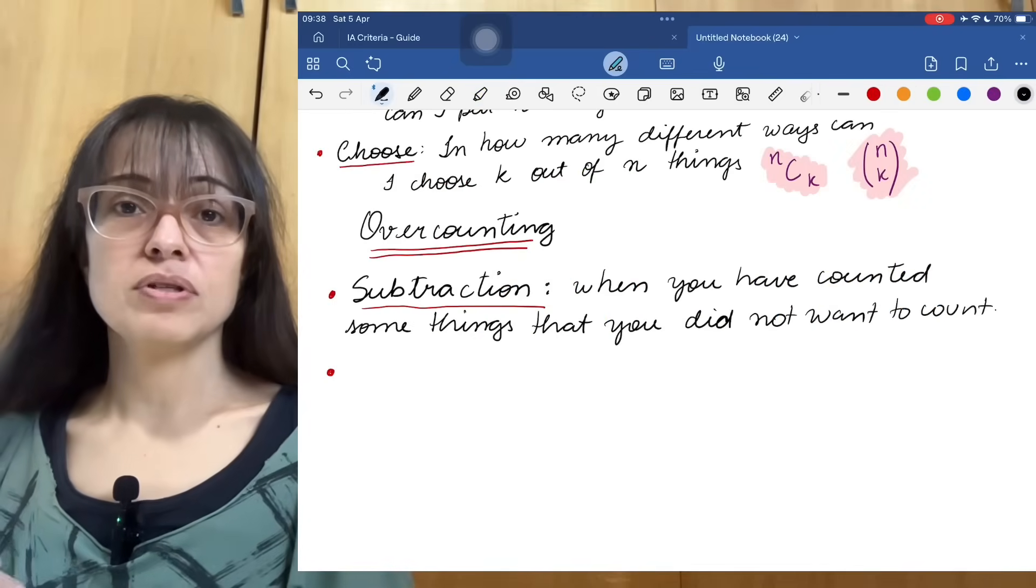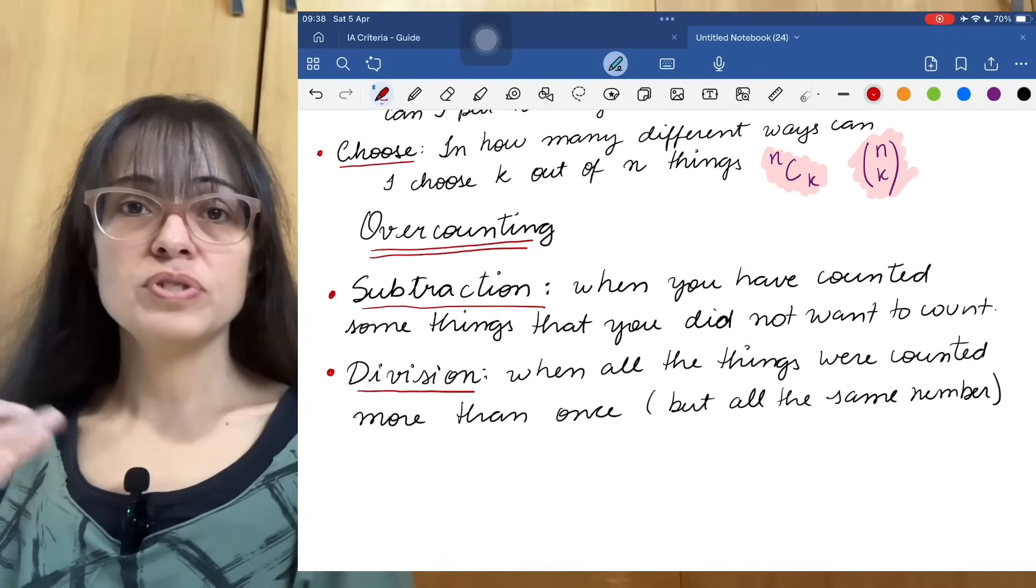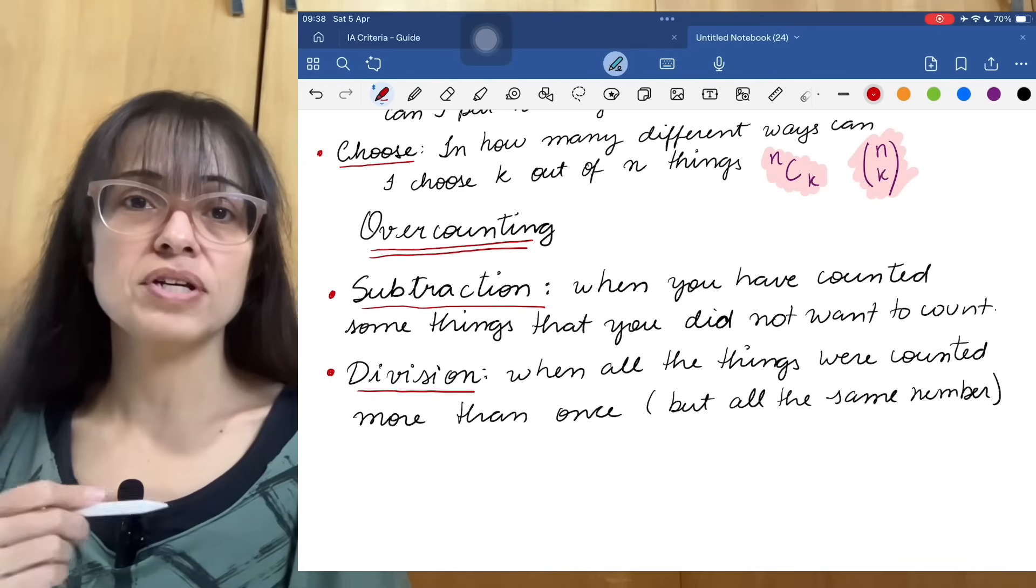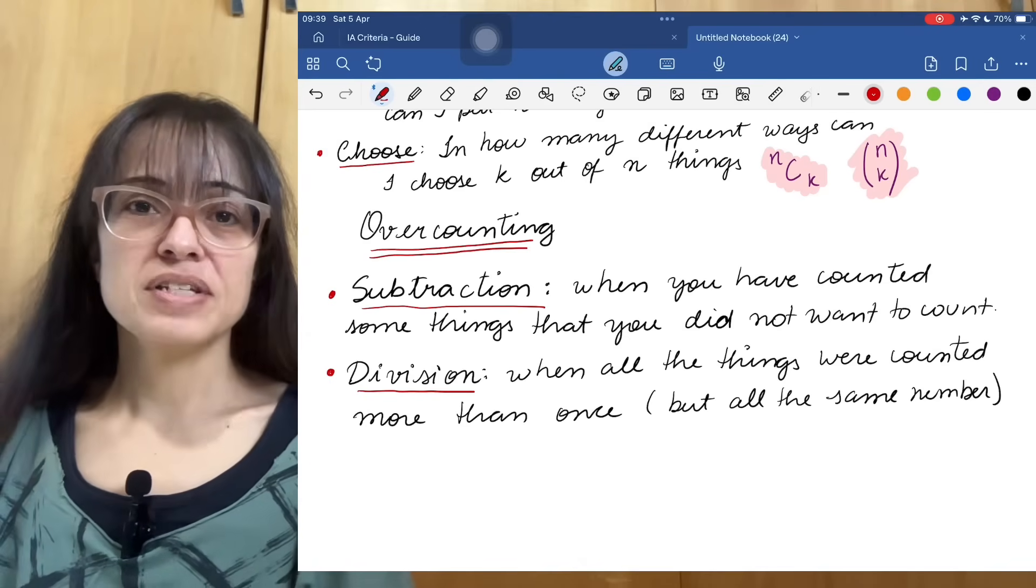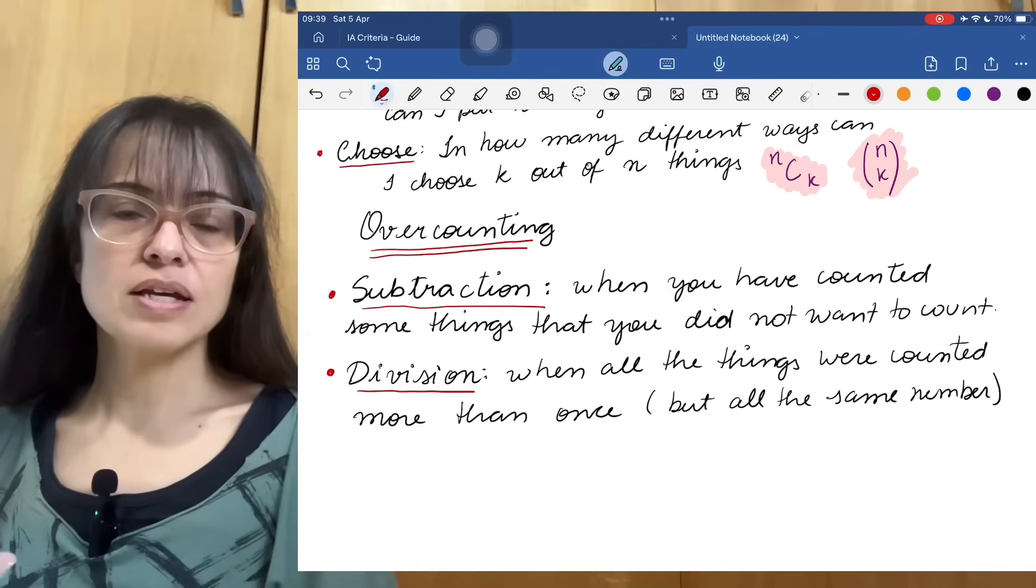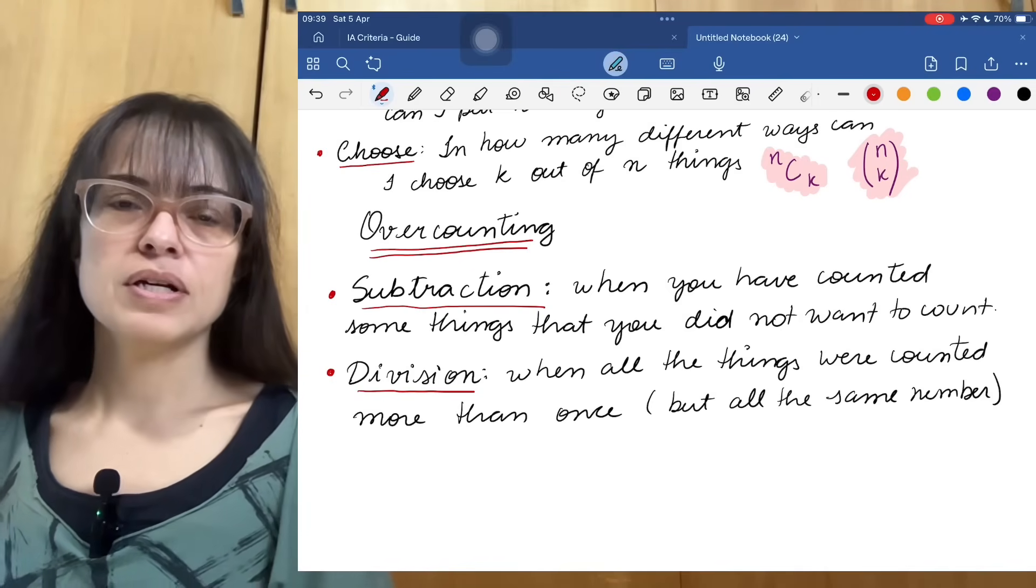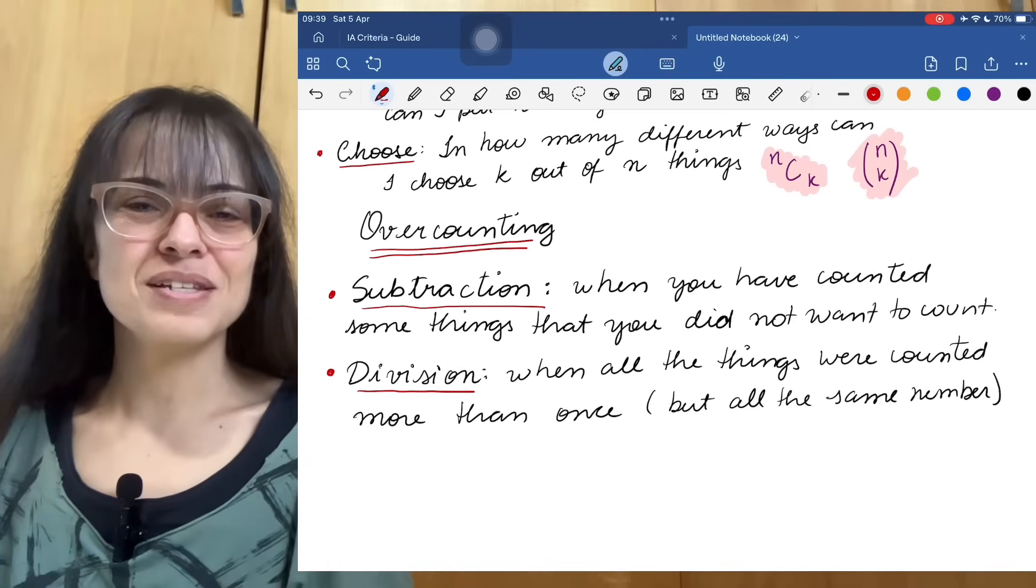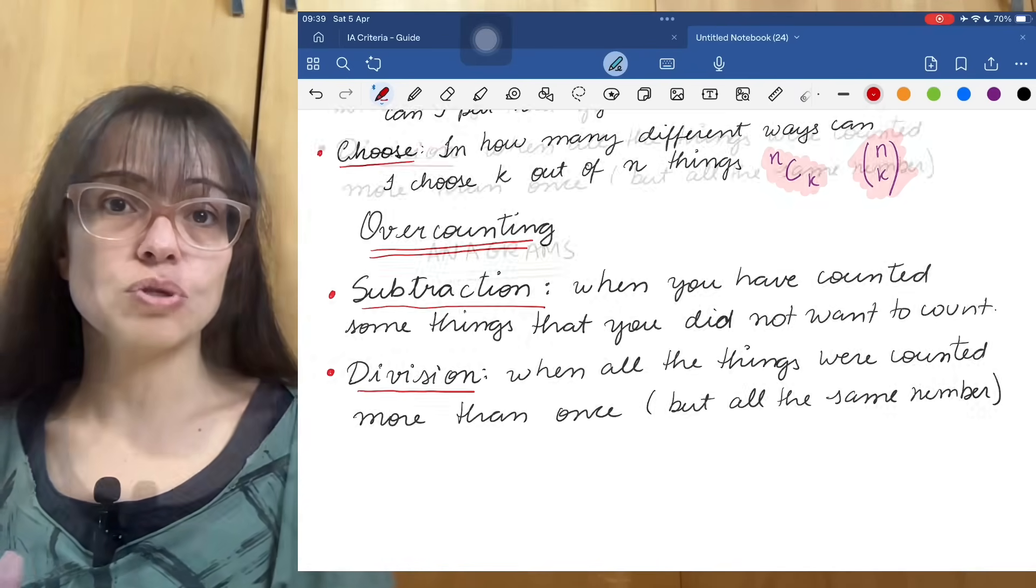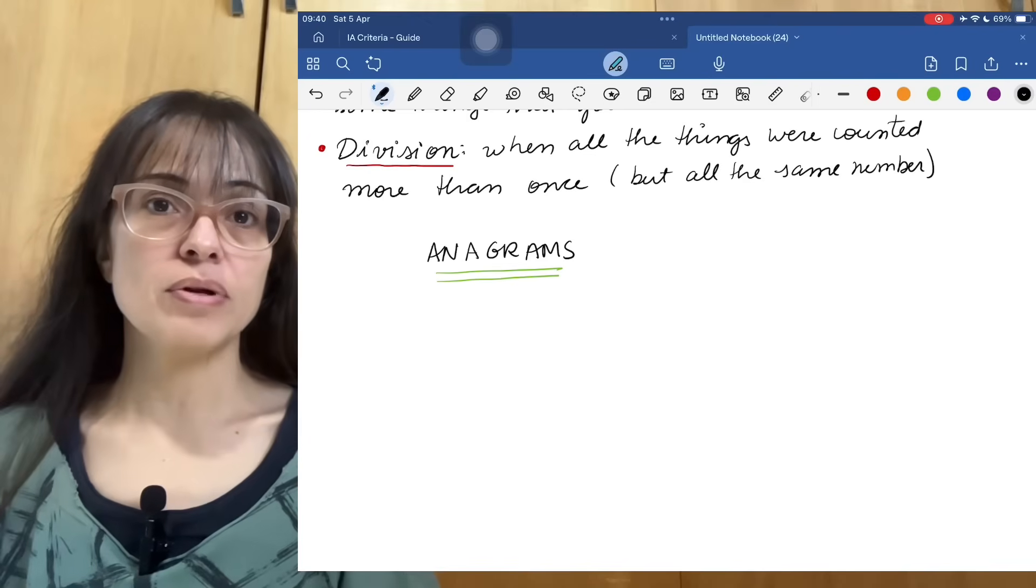But there is a second type of overcounting that I also want to mention, and that is division. That is when you didn't count any things that you didn't want to count, but you counted all the things that you wanted multiple times. So for example, everything was counted twice, or everything was counted three times. In that case, you're going to finish your strategy by dividing by two or by dividing by three. And that kind of strategy is very common, for example, in problems about anagrams.